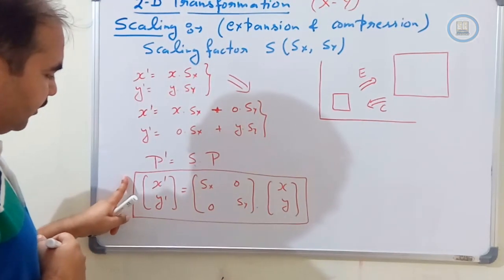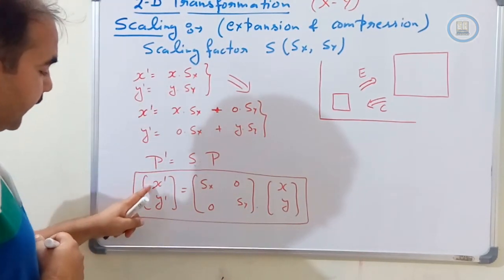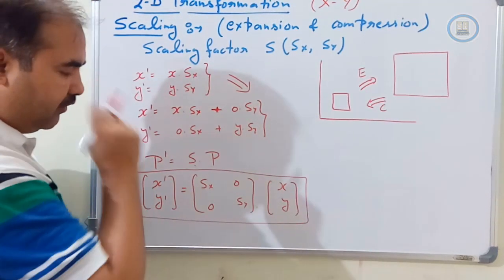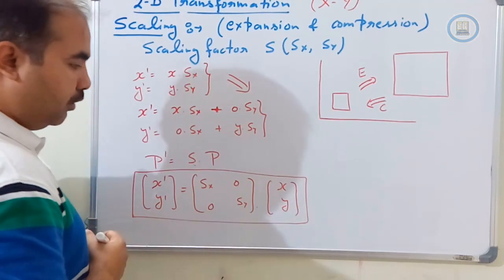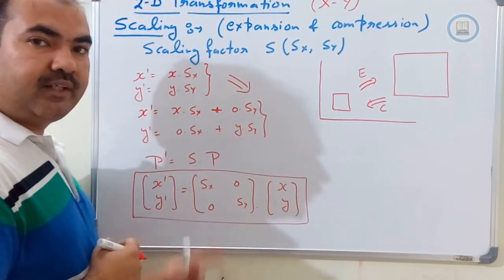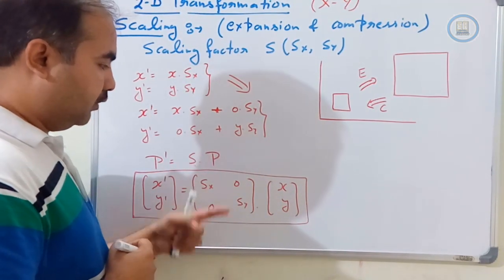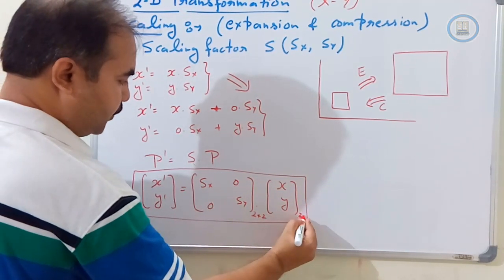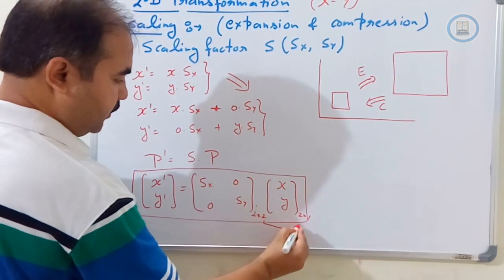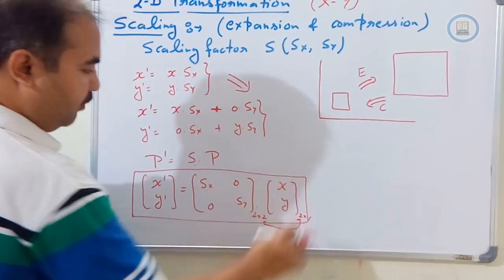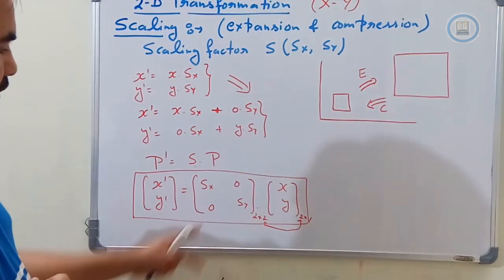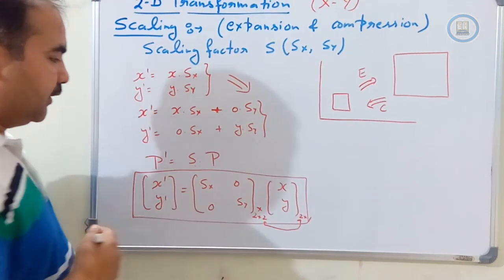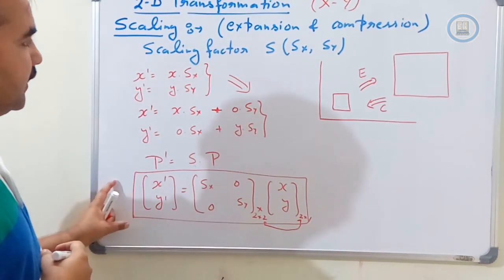This is the matrix equation for the scaling operation: [x', y'] = [[Sx, 0], [0, Sy]] × [x, y]. To check matrix compatibility: the scaling matrix is 2×2 and the pixel vector is 2×1. Since the number of columns of the first matrix equals the number of rows of the second, we can apply matrix multiplication. So this is the matrix representation for the scaling operation.